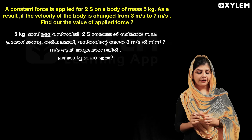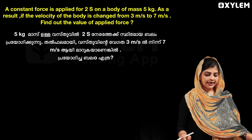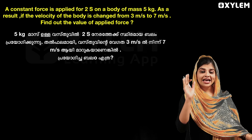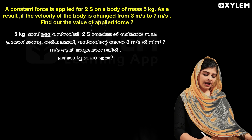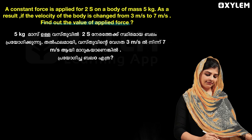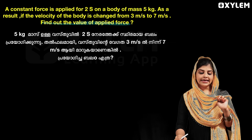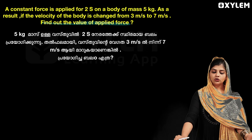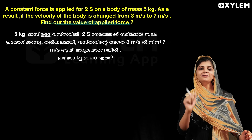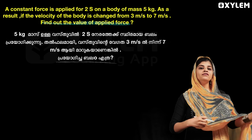The next question: A constant force is applied for 2 seconds on a body of mass 5 kg. As a result, the velocity of the body is changed from 3 m per second to 7 m per second. Find out the value of the applied force.